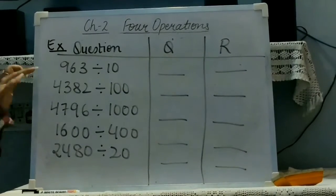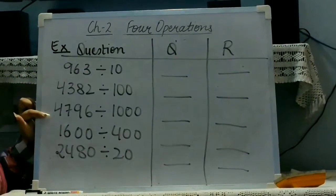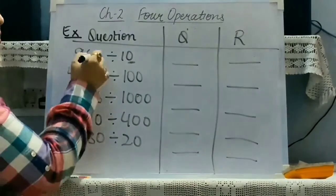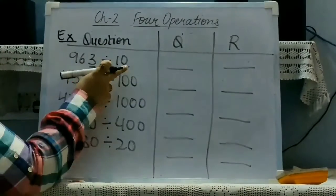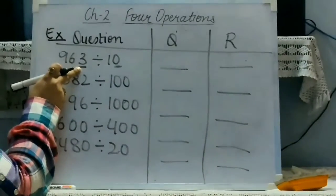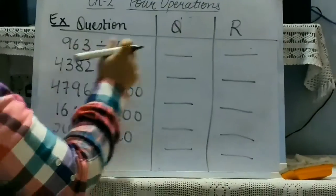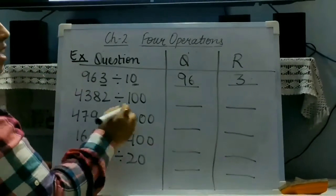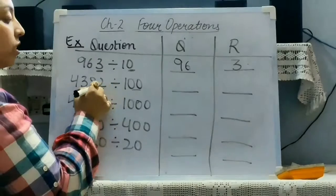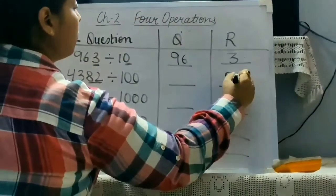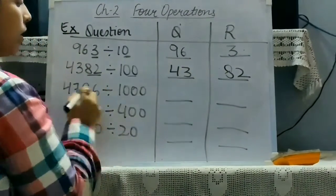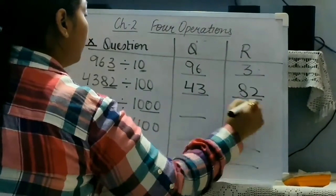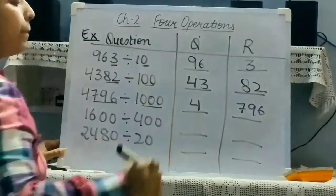So, if we are dividing by 10, 100, 1000, we can follow a pattern. Here, the number of zeros decide the number of remainder from the extreme right in the dividend. Here, 1 zero, so 1 digit from the right hand side will be remainder and the rest will be quotient. In 100, we have 2 zeros, so last 2 digits will be remainder and the rest will be quotient. Here is 3 zeros, so last 3 digits will be remainder and the rest will be quotient.